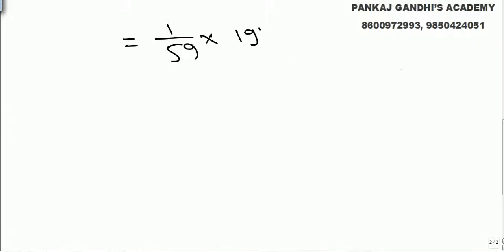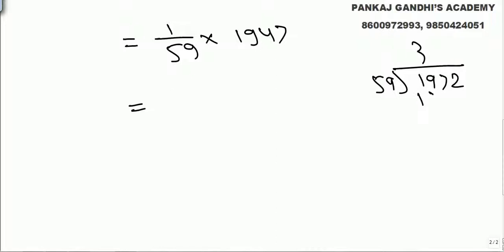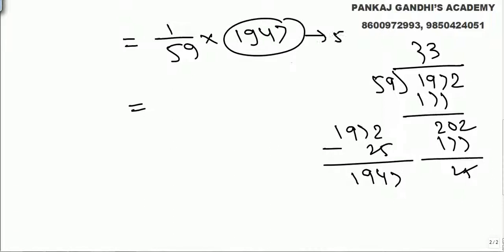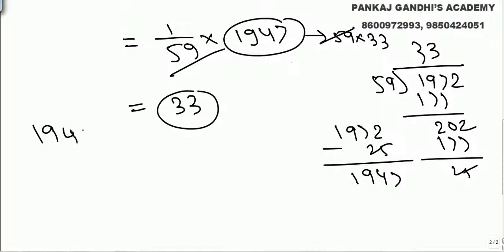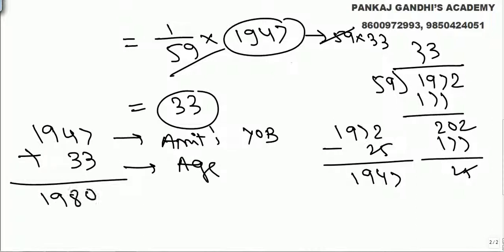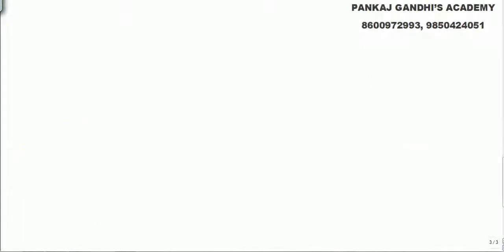If Amitabh's year of birth is 1947 — which is 59 times 33, and 1972 minus 25 gives us 1947 — his age when Abhishek is born was 33. That's going perfectly fine. Abhishek is born in 1980, which is Amitabh's year of birth plus 33. This works.